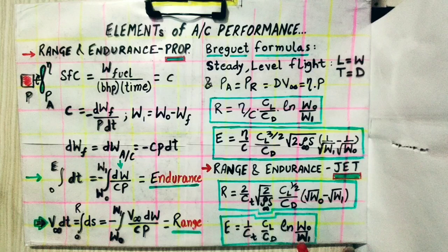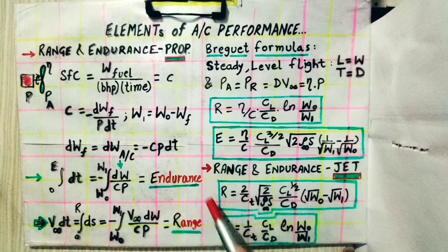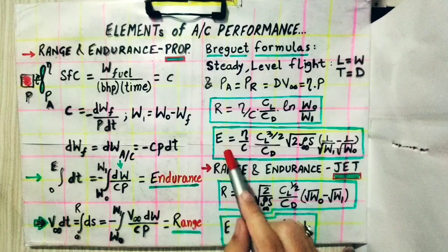An interesting symmetry exists: the range formula for a jet engine is similar to the endurance formula for a propeller aircraft, and the endurance formula for a jet engine is similar to the range formula for a propeller aircraft. Keep this in mind. We will continue in the next lecture. Thank you.